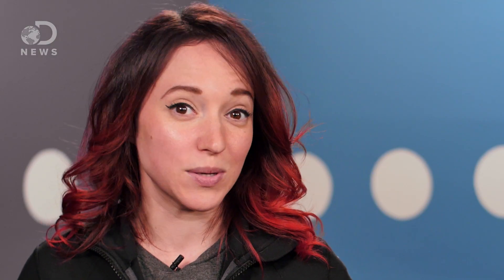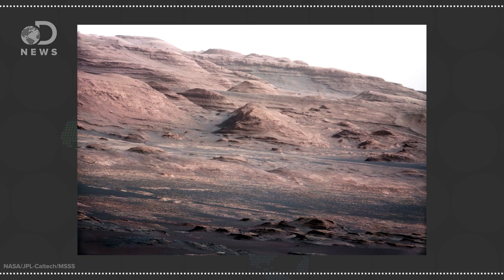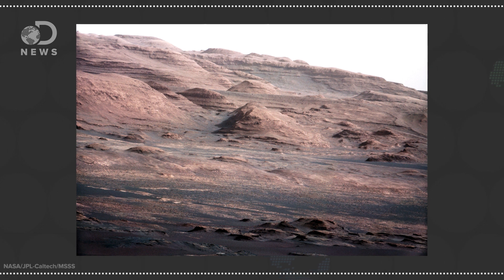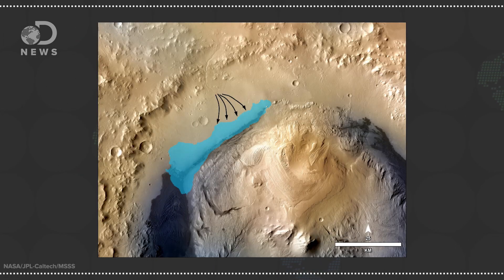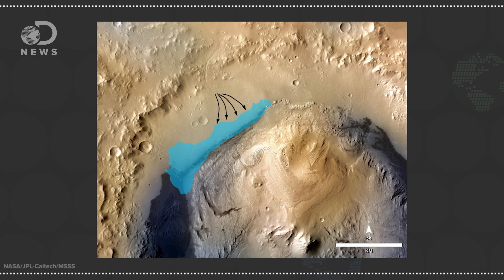Gale Crater is a good place to start. That's where NASA's Curiosity rover is currently roving around. Not only is there a three-mile-high stratified mountain in the middle of the crater offering a look at Mars' geologic history, the area shows evidence of past water and atmospheric methane, two things that speak to past life.